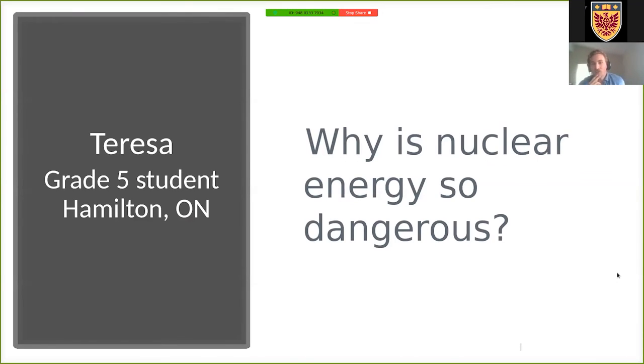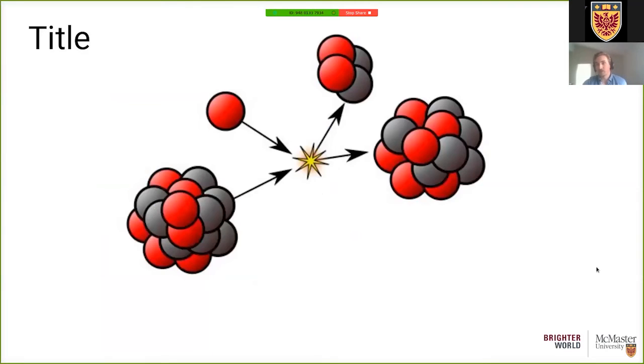Okay, so Teresa asks, why is nuclear energy so dangerous? So the first thing I'd like to say here is that nuclear energy does not have to be dangerous, but it certainly can be extremely dangerous. And to understand why, we have to think a little bit about how nuclear energy gets made. So inside of a nuclear reactor, those cores of atoms that we talked about when we were learning about plasma get hit by a particle called a neutron, and they break apart into two smaller atoms that have more energy than the initial atom did. And that excess energy is used to produce heat which boils water that turns a steam turbine.